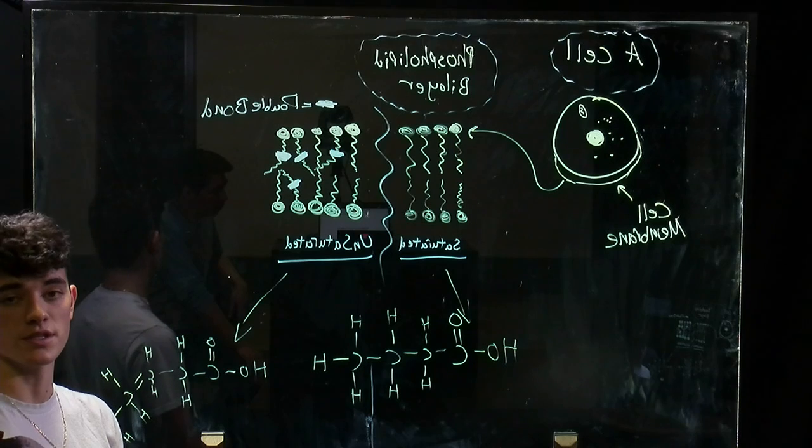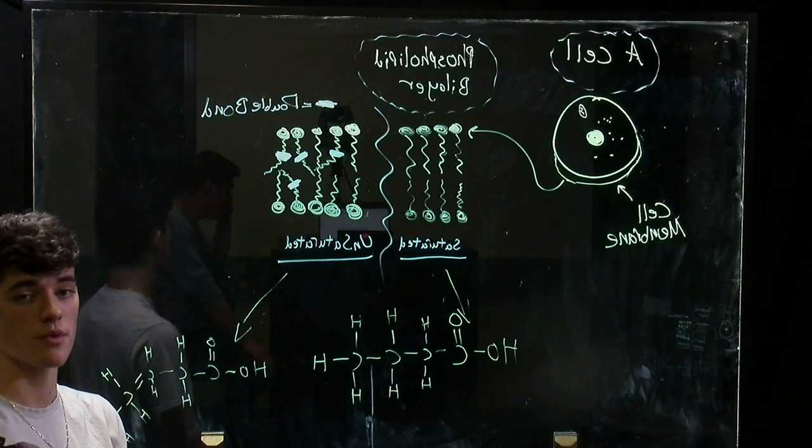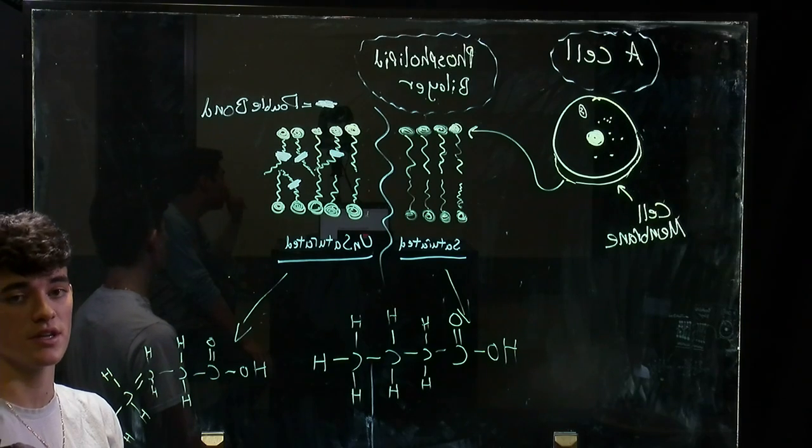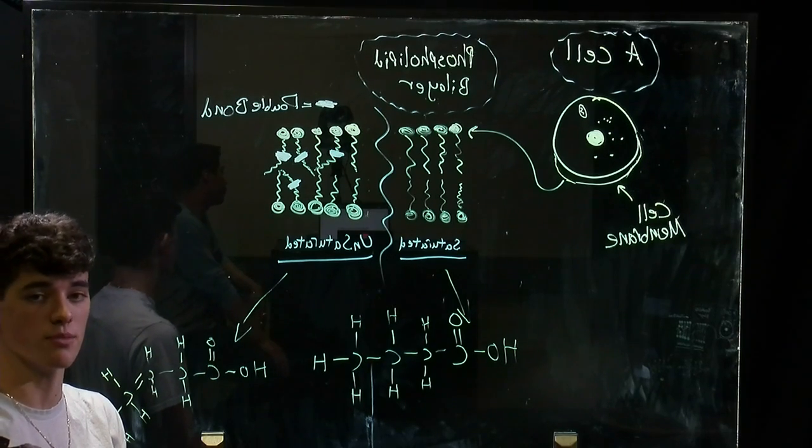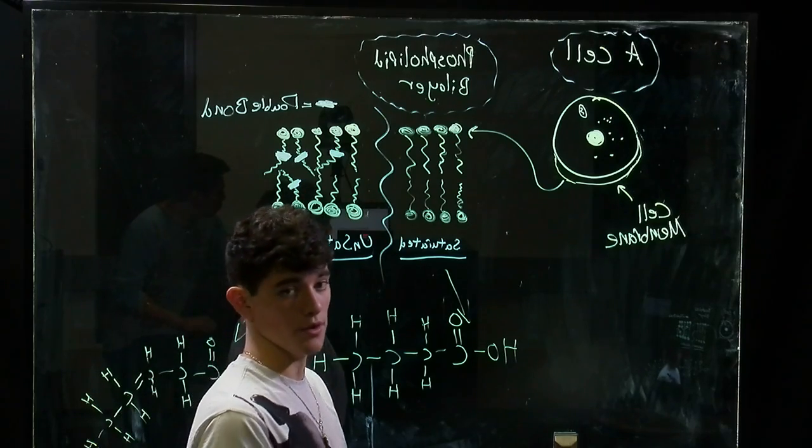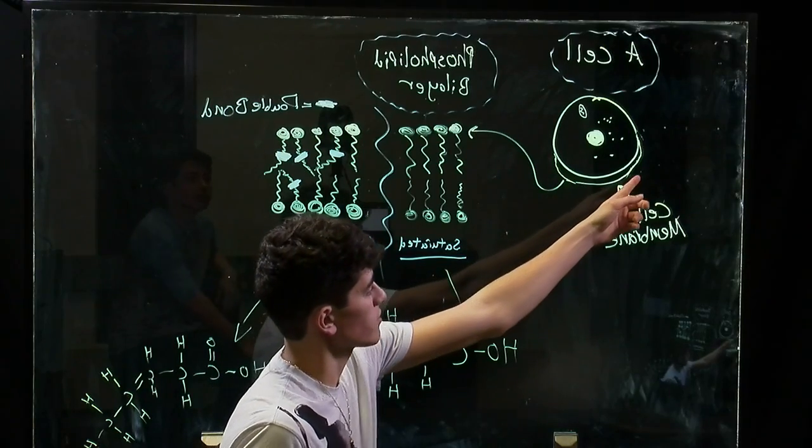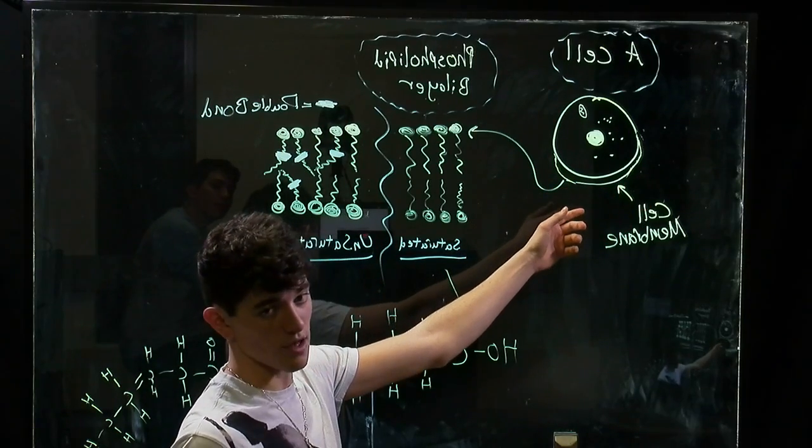Hello Bio 42 students, today we will be discussing the phospholipid bilayer within the cell membrane, as well as its unsaturated and saturated fatty acid tail components. All cells have a cell membrane, and here in this diagram of the cell, this distinct outer layer is the cell membrane.